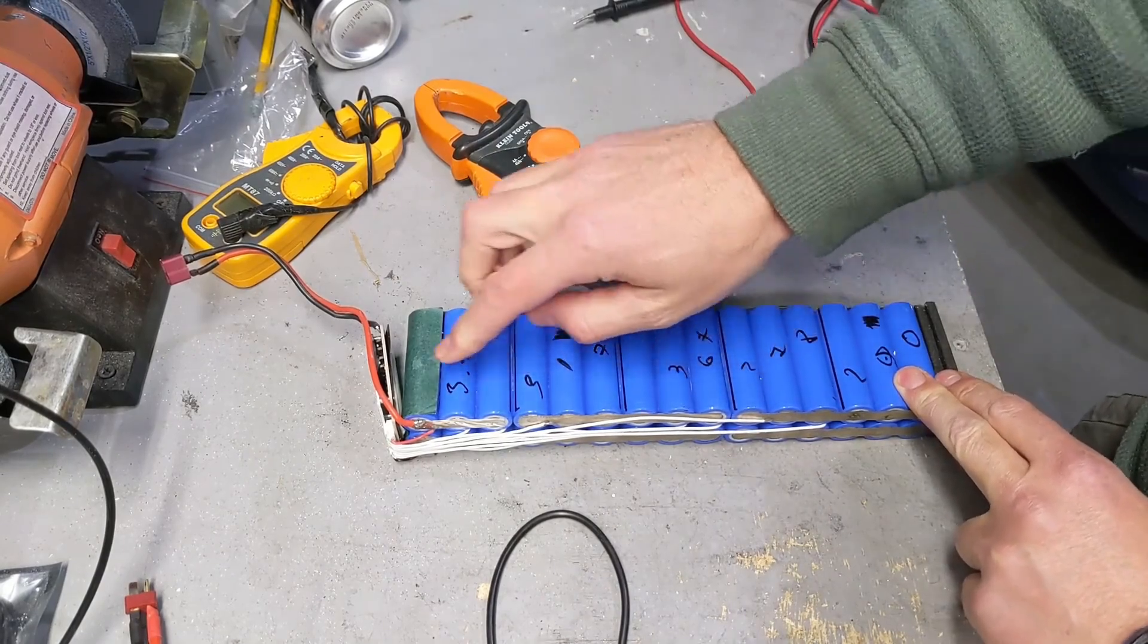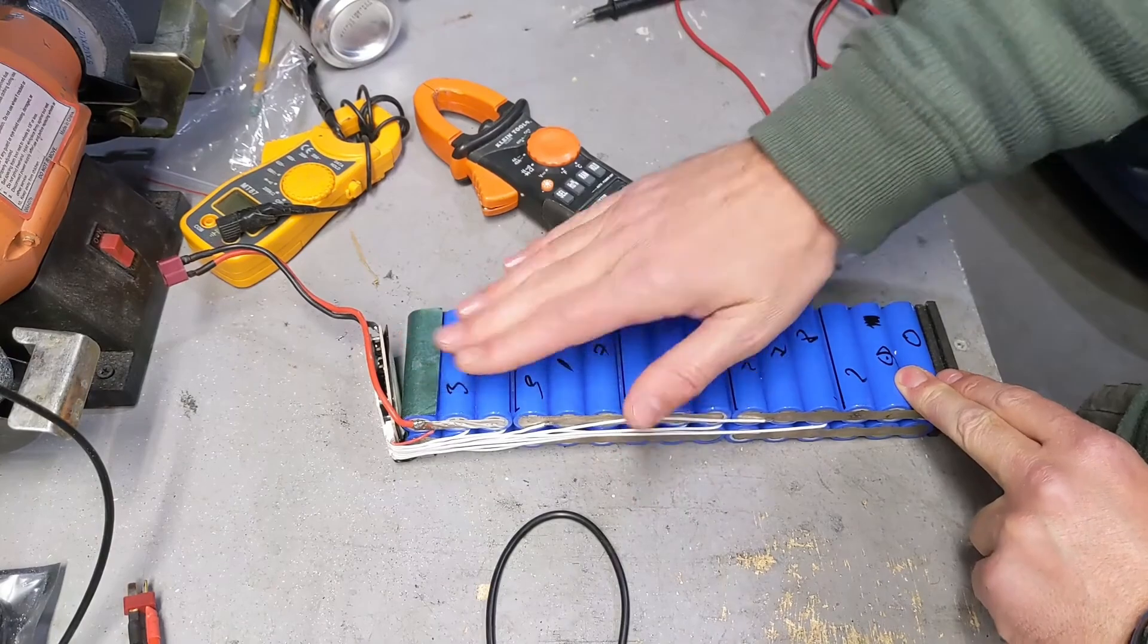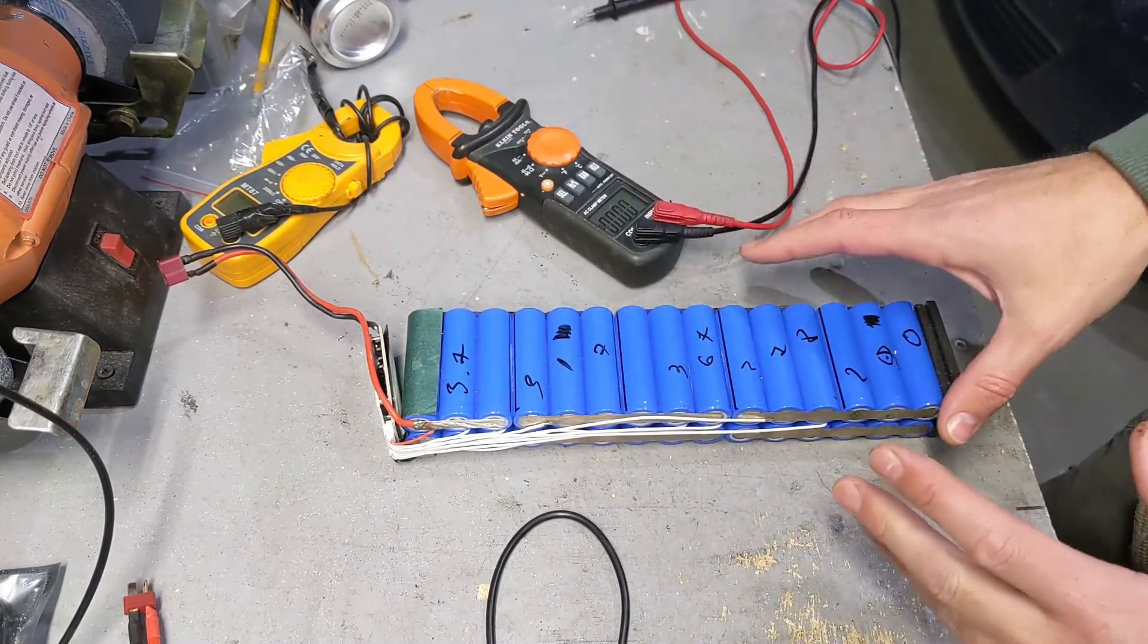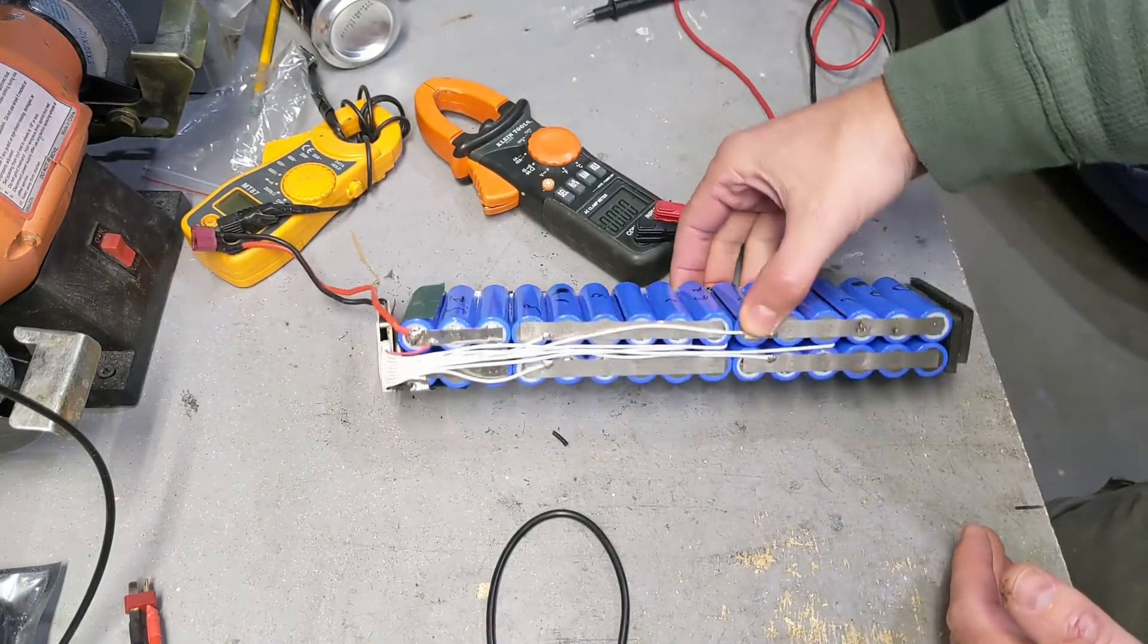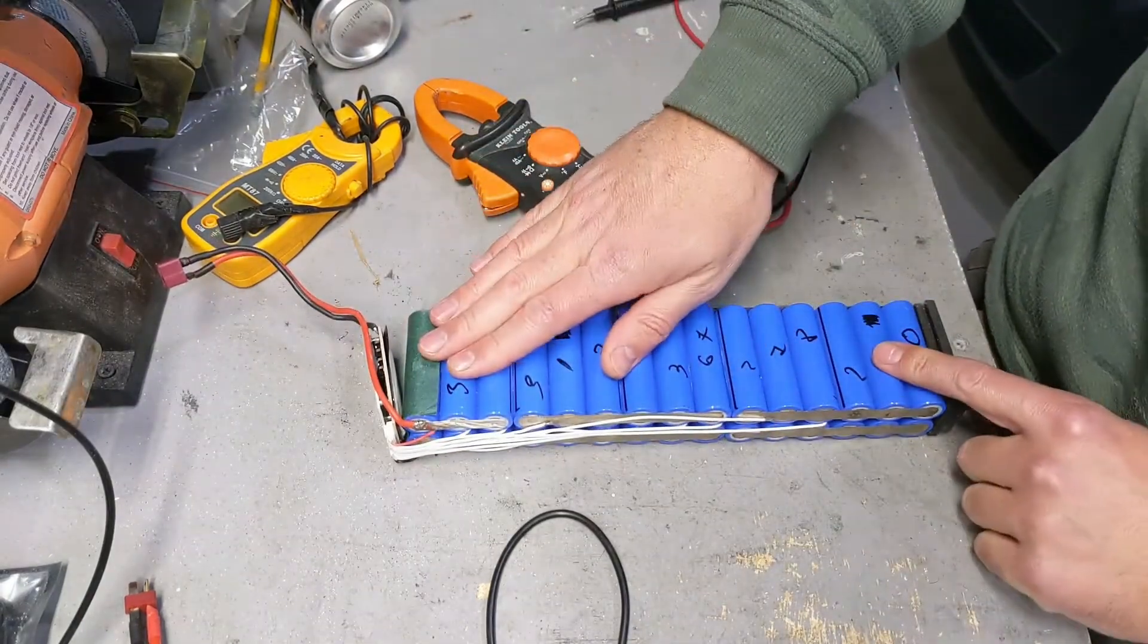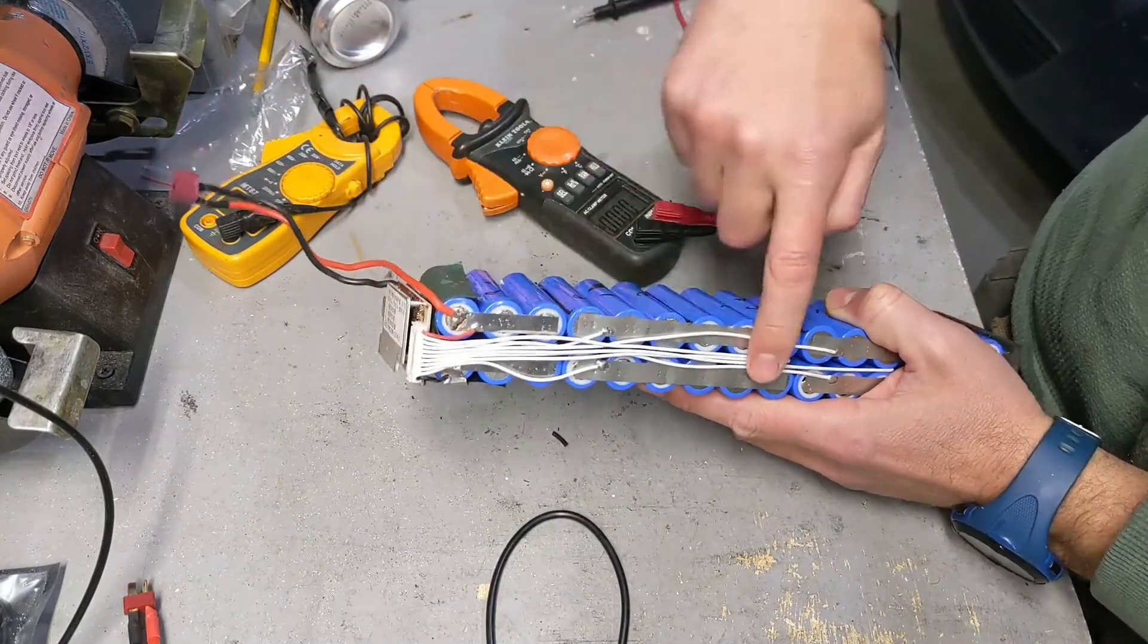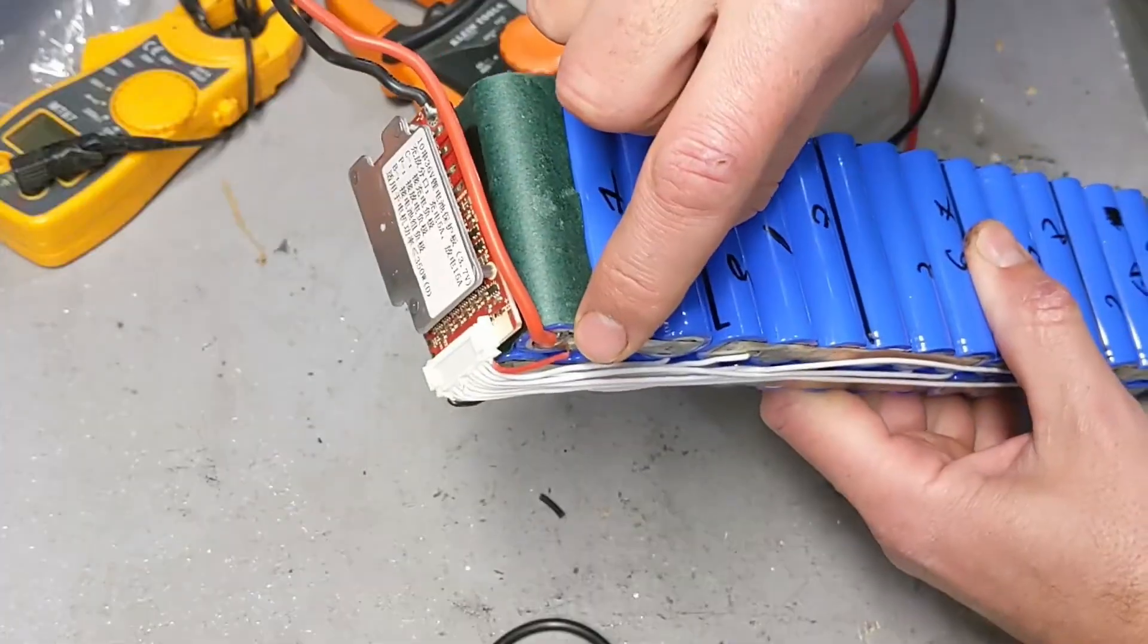You notice I didn't say cell, I said pack of cells, because this BMS controls three cells. This is a 10s3p battery, 37 volt, and it's only charging and discharging about 100 watts. It's supposed to have at least 300, so it's only a third of capacity. What's going on is this BMS - its job is to cut off the voltage so it protects the cells.